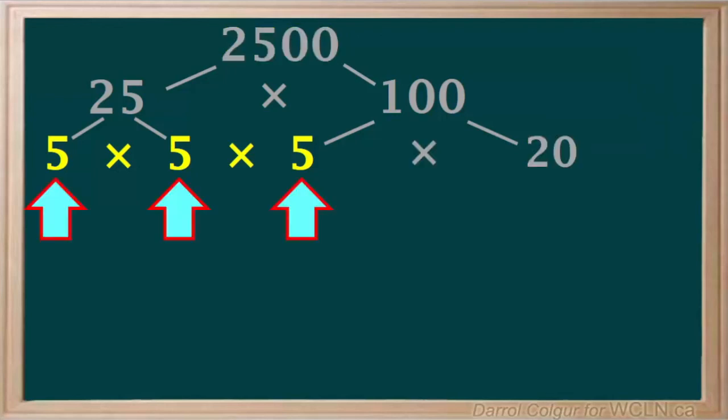These three fives are all prime numbers, so they can't be divided anymore. However, the 20 is not a prime number. It can still be factored into smaller numbers.